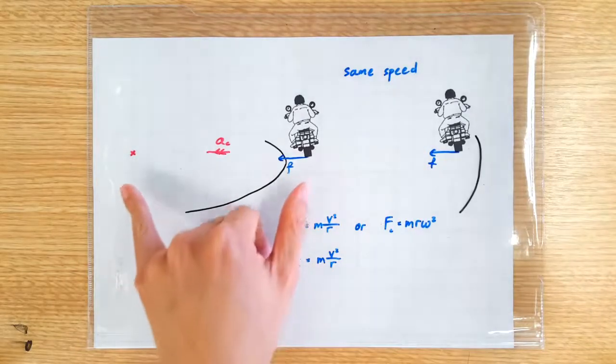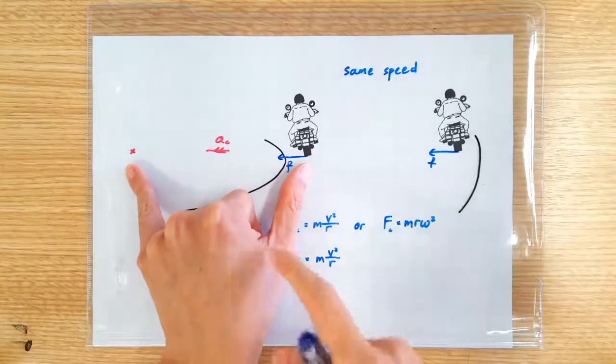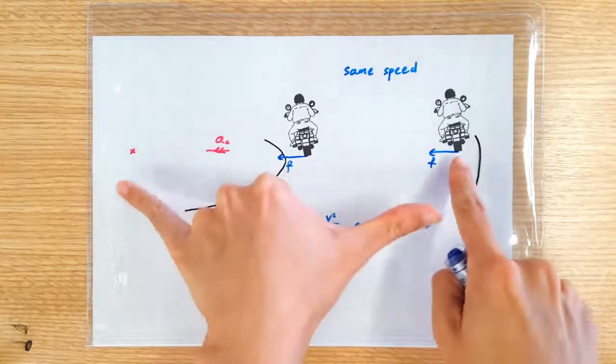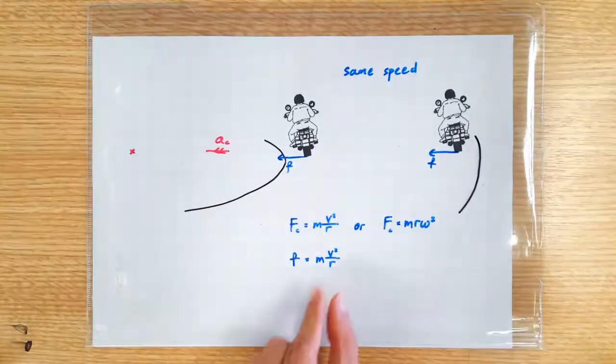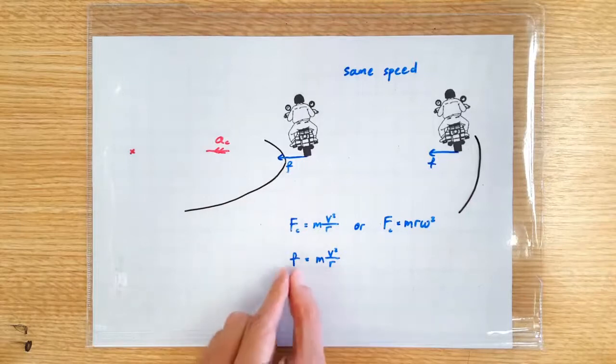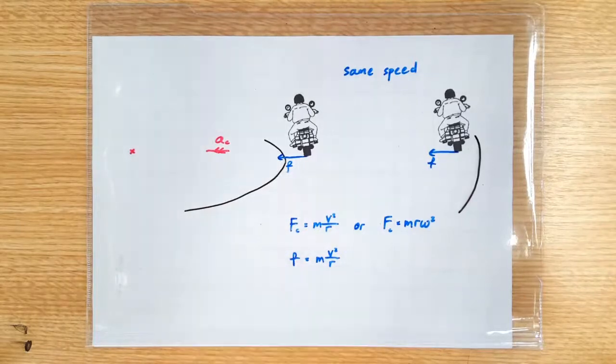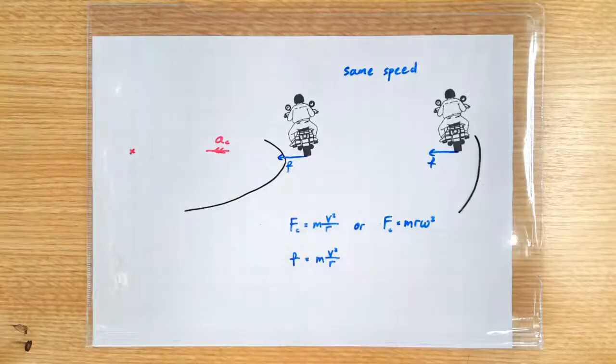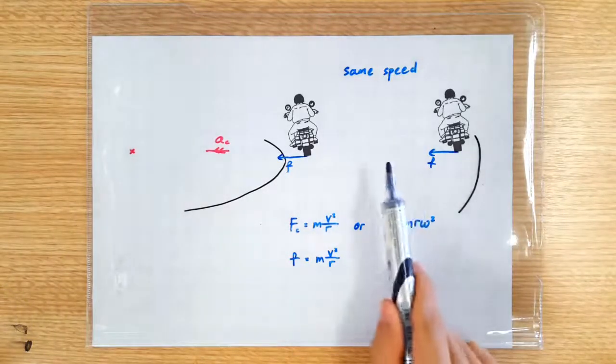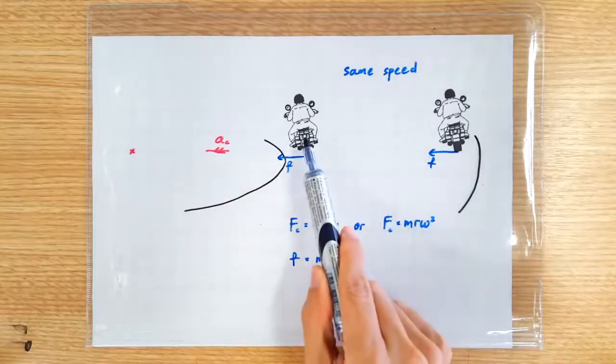So the radius of circular motion for this guy is half the radius of circular motion for this guy. A smaller r implies a larger frictional force, because a tighter turn at the same speed requires a larger centripetal force. So if only one of them skids, it has got to be this guy.